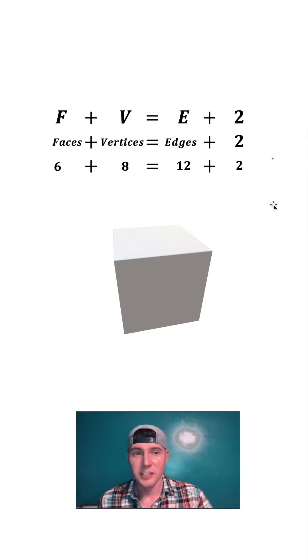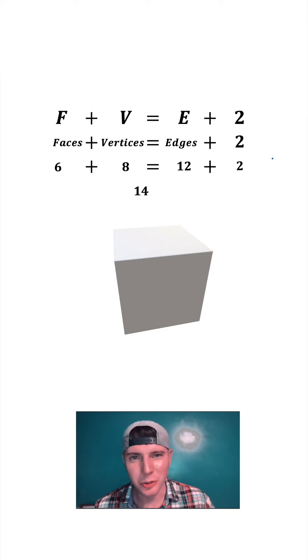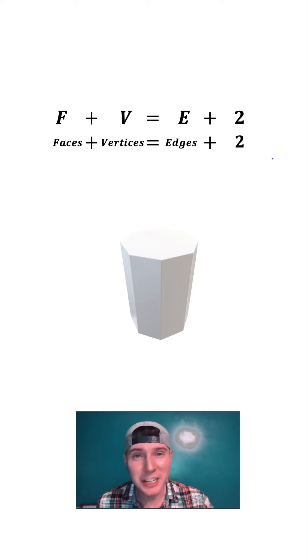Six plus eight is 14, and 12 plus two is 14. So the number of faces plus the number of vertices equals the number of edges plus two. This will work for any polyhedron. A polyhedron is any three-dimensional figure made up entirely of straight lines. Want to do another one?